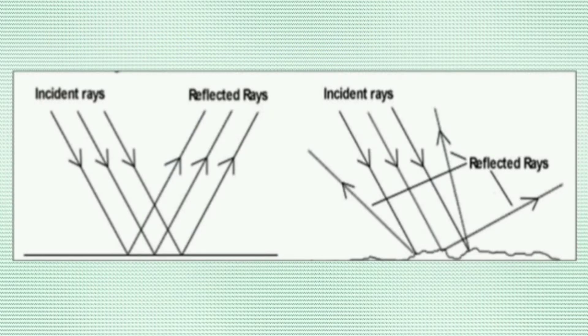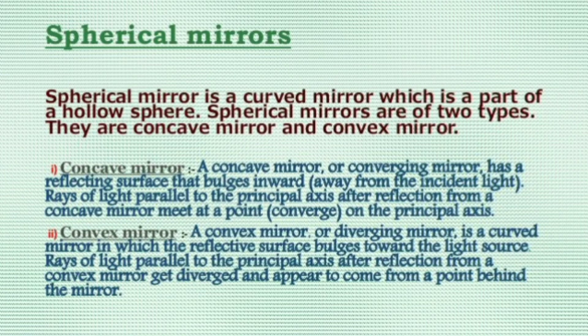In this figure we can see clearly: in the first figure, reflection takes place in a regular manner, and in the second figure, reflection takes place in an irregular manner. A spherical mirror is a curved mirror which is a part of a hollow sphere. Spherical mirrors are of two types: concave mirror and convex mirror. A concave mirror is one in which reflection of light takes place at the surface curved inward, and a convex mirror is one in which reflection takes place at the surface curved outward.